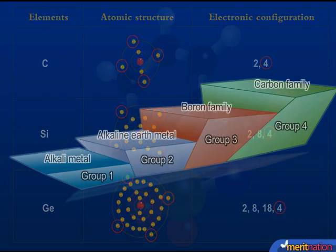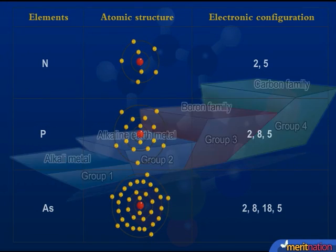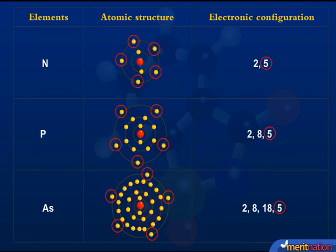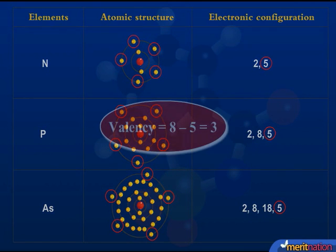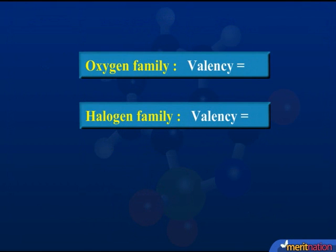And therefore, they have the valencies of 1, 2, 3 and 4. Now, the elements of nitrogen family have 5 valence electrons, but their valency is, as I told you, 8 minus 5, that is 3. Similarly, the valencies of elements of oxygen family and halogens are 2 and 1 respectively.